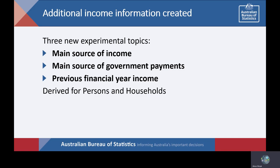Three additional income topics were created for the 2016 census using integrated administrative data: main source of income, which identifies the source from which a person or household receives the largest amount of their income; main source of income type, which identifies the type of payment that they mainly receive; and previous financial year income, which provides an estimate for the total amount of income earned by a person or household between July 2015 and June 2016 — that is, the financial year prior to census night.